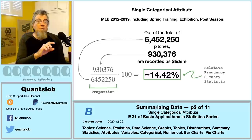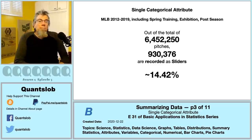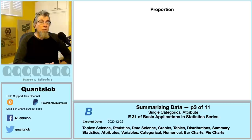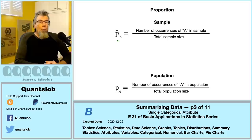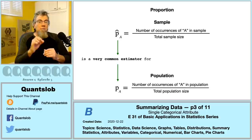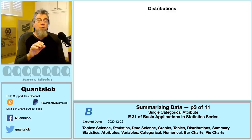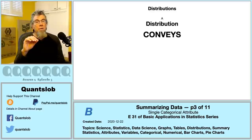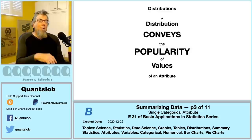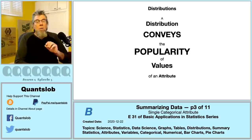Our attribute pitch type is categorical and we are creating numerical summary statistics from it. This method of calculating proportion — dividing the frequency of an occurrence by the total size of our collection — is used descriptively to compute our population parameter, and is also the common way to compute our sample statistic proportion for purposes of statistical inference. A distribution is a way of expressing the popularity of values. When we show a distribution by table, graph, or mathematical function, we are conveying the popularity of values — true whether our attribute is categorical or numerical.